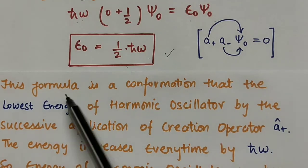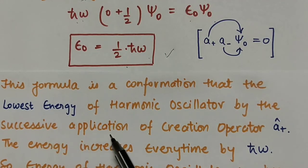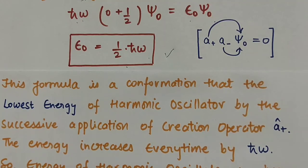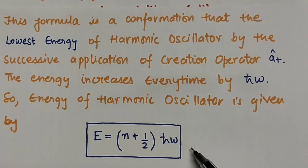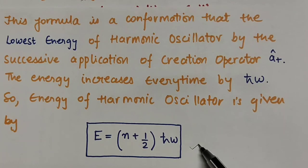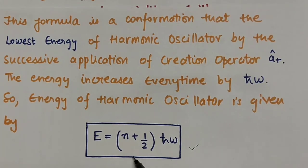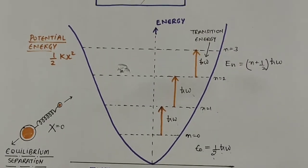This formula confirms that the lowest energy of the harmonic oscillator is ½ħω. By successive application of the creation operator a+, the energy increases each time by ħω. So the energy of the harmonic oscillator is given by E = (n + ½)ħω. This is the same formula obtained in my previous video from the analytic method, and it is also called the zero-point energy.